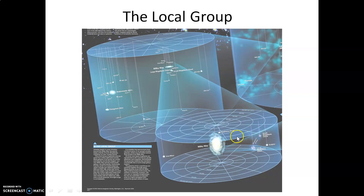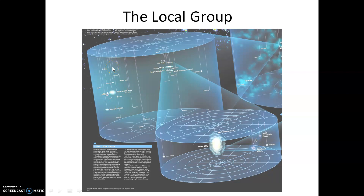Moving into the local group, we place the Milky Way in context. Relatively close by, our next biggest neighbor — the next big spiral galaxy — is the Andromeda galaxy, roughly 2.2 to 2.3 million light years away. Another smaller spiral galaxy close to Andromeda but further from us is Triangulum. Together, these comprise the local group of galaxies, our local galaxy cluster. The distance from one side of the cylinder to the other is about 3 million light years.